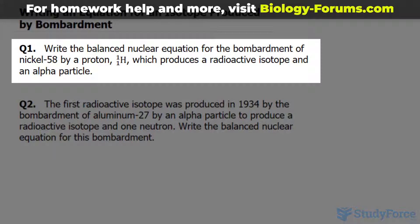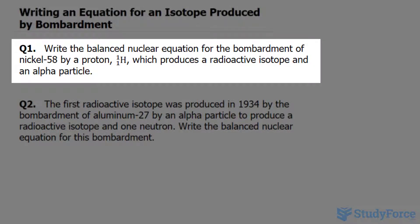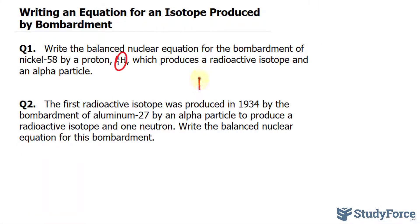And question one reads, write the balanced nuclear equation for the bombardment of nickel-58 by a proton represented by this symbol, which produces a radioactive isotope and an alpha particle. So let's write down nickel and its atomic mass is 58.